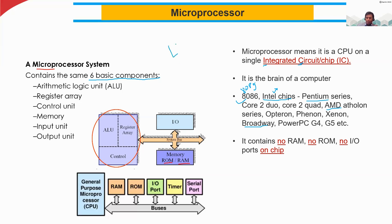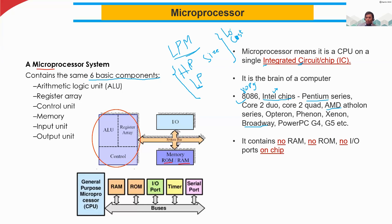High performance means high speed, and low power is always important when designing processors — these two factors are very, very important. Low power, high performance, and smaller size are key. The overall cost should also be very low, because as a user you want high speed but you are more concerned about the price. These are all challenges for the manufacturers and companies producing these processors.